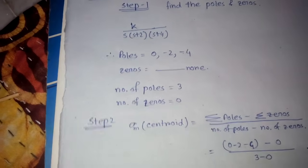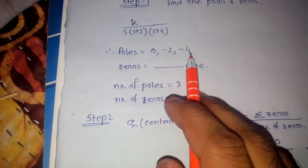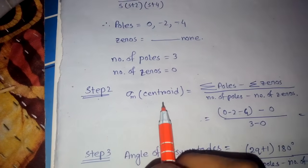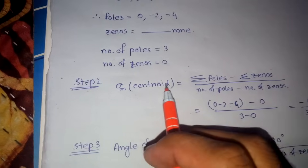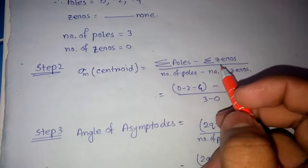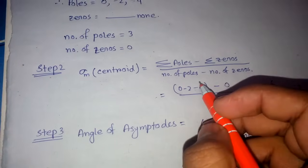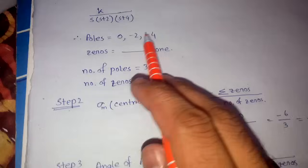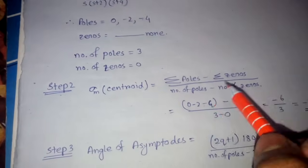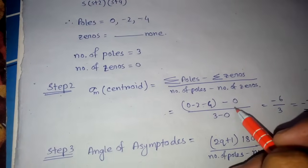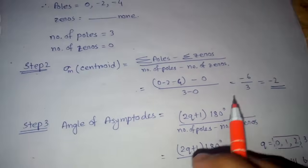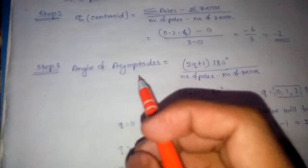There are no zeros. The number of poles is 3 (1, 2, 3) and the number of zeros is also zero. Step 2 is to find out the centroid. The centroid formula is: summation of poles minus summation of zeros, divided by the number of poles minus number of zeros. Since there are no imaginary poles, everything is real. Calculating this gives minus 2 as the centroid.